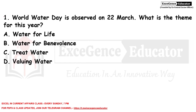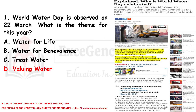Today's first question: World Water Day is observed on 22nd March. What is the theme for this year? The theme for this year was 'Valuing Water.' World Water Day was started by the United Nations to focus on the importance of fresh water. The United Nations marks March 22nd every year as World Water Day. The theme of World Water Day 2021 is 'Valuing Water.'